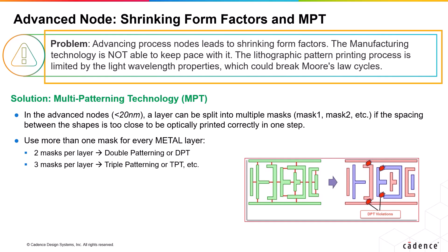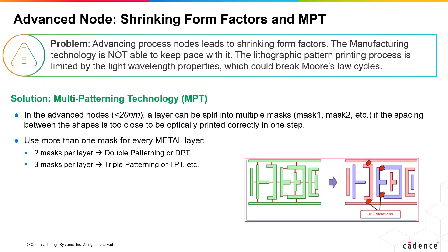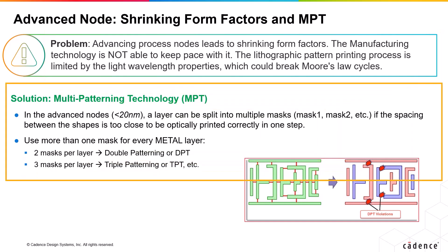Research teams have come up with an idea to use two or more masks for every metal layer, and it is called MPT, or multi-patterning technology. If the number of masks is two for a given MPT case, then it goes by the name double patterning or DPT. If the number of masks is three, then it goes by the name triple patterning or TPT.